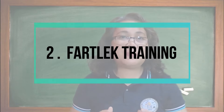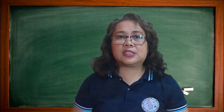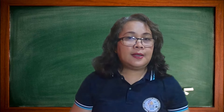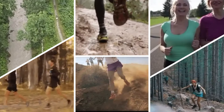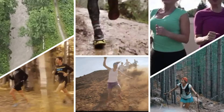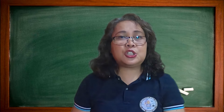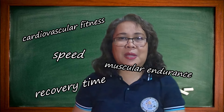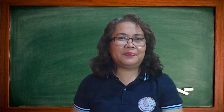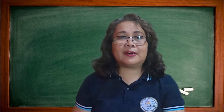Fartlek is a Swedish word for speed play and is a form of continuous training during which the speed or terrain of the activity is varied, so both aerobic and anaerobic energy systems are stressed. This could involve periods of sprinting, jogging, or walking, or could include uphill, downhill, and flat running. Due to the nature of different intensities, this type of training is useful for improving cardiovascular fitness, muscular endurance, speed, recovery time, and lactate threshold. This is often a more demanding form of training compared to continuous training due to the higher intensities.